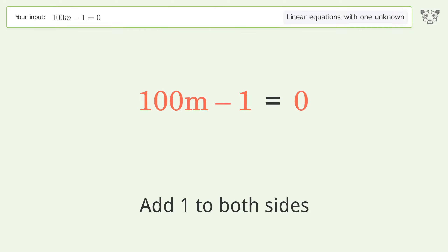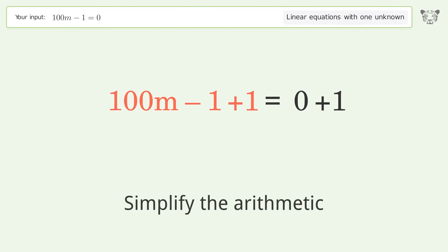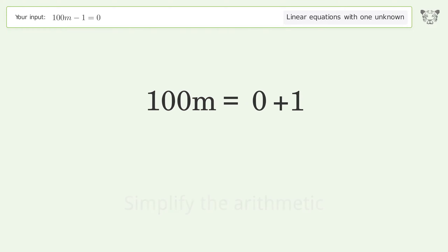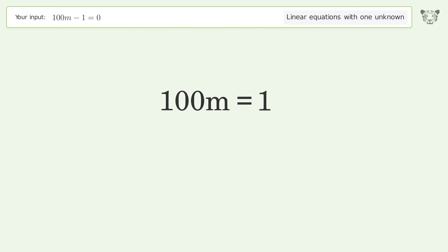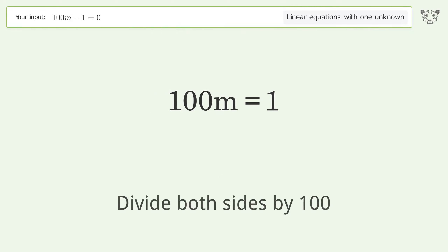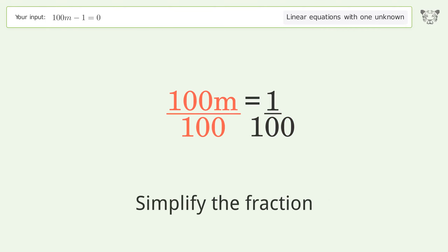Simplify the arithmetic. Then isolate m by dividing both sides by 100, and simplify the fraction.